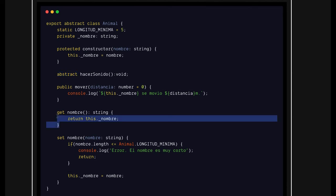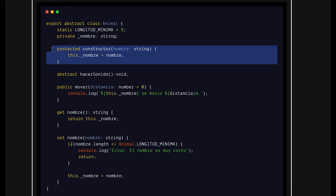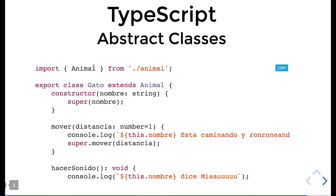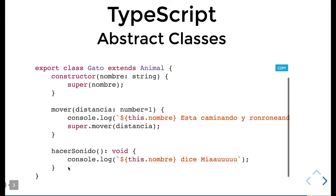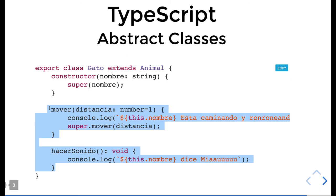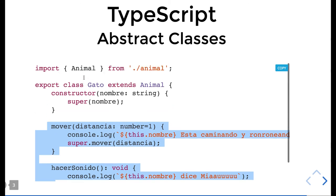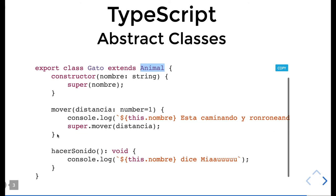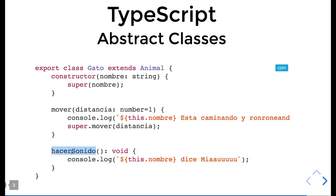Here we have a getter and setter for the private property, and protected methods which can be inherited by the subclass of the Animal class. This 'Ghetto' class is extending the abstract Animal class, and here we have defined and overridden both methods — redefined the abstract method from the abstract class.